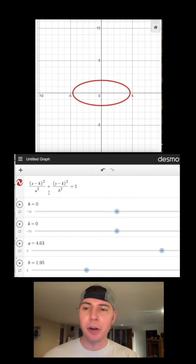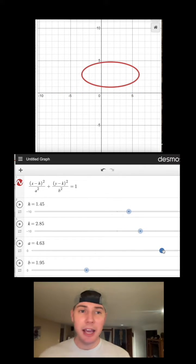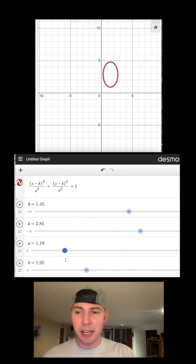It's x minus h squared over a squared plus y minus k squared over b squared equals 1. h moves it left and right, k moves it up and down. a is the radius in the x direction, and so when you shrink a, it shrinks the radius in the x direction or it grows.